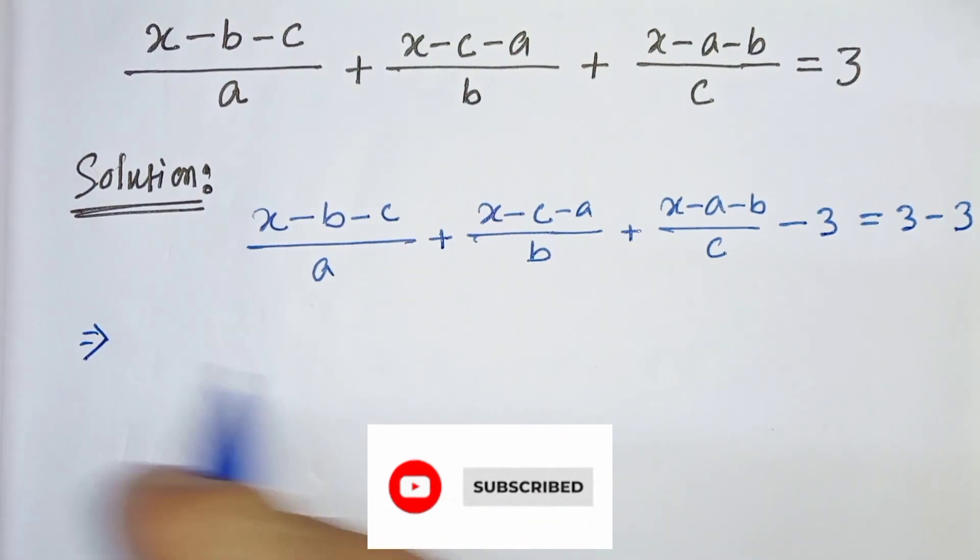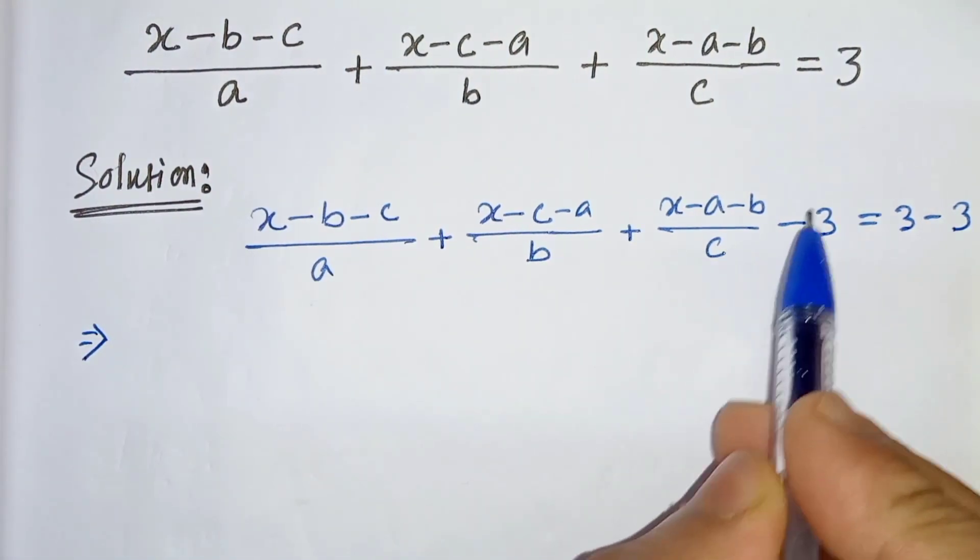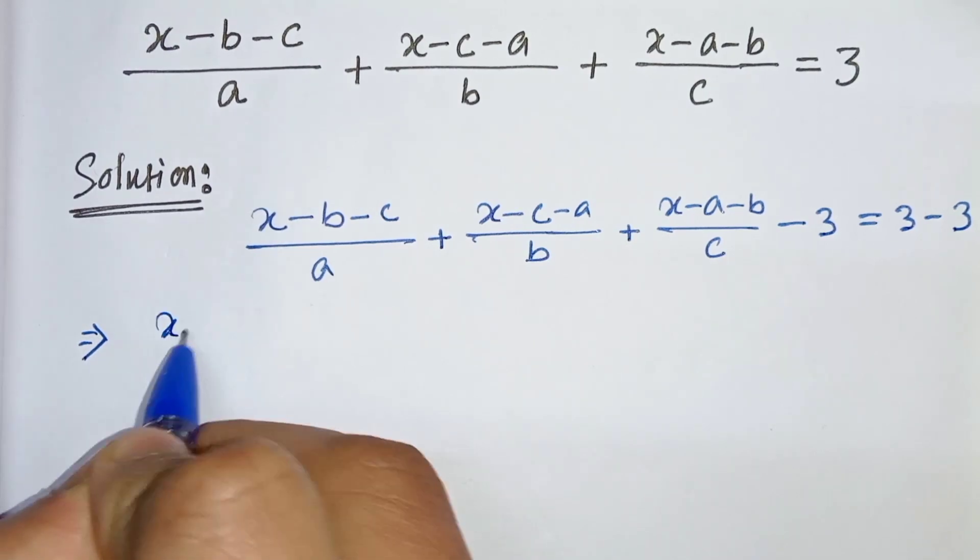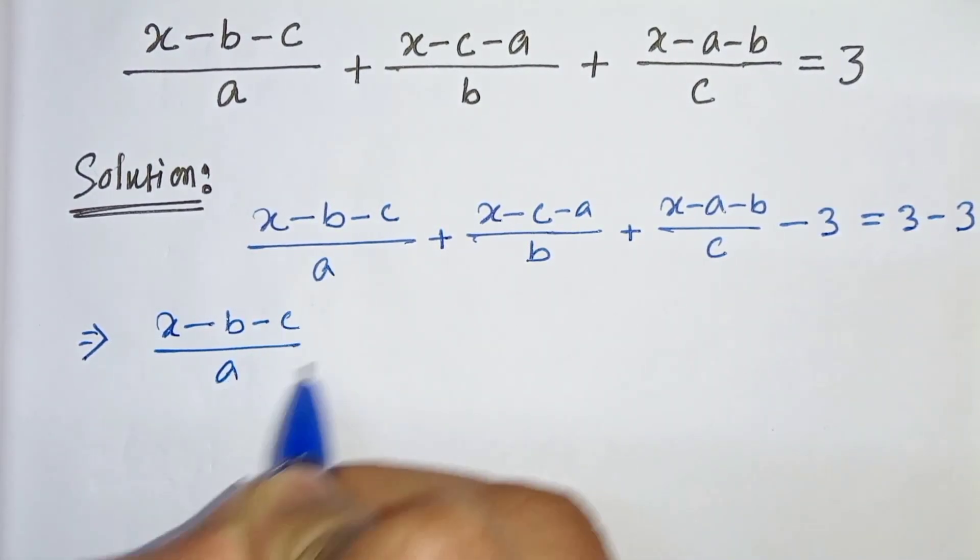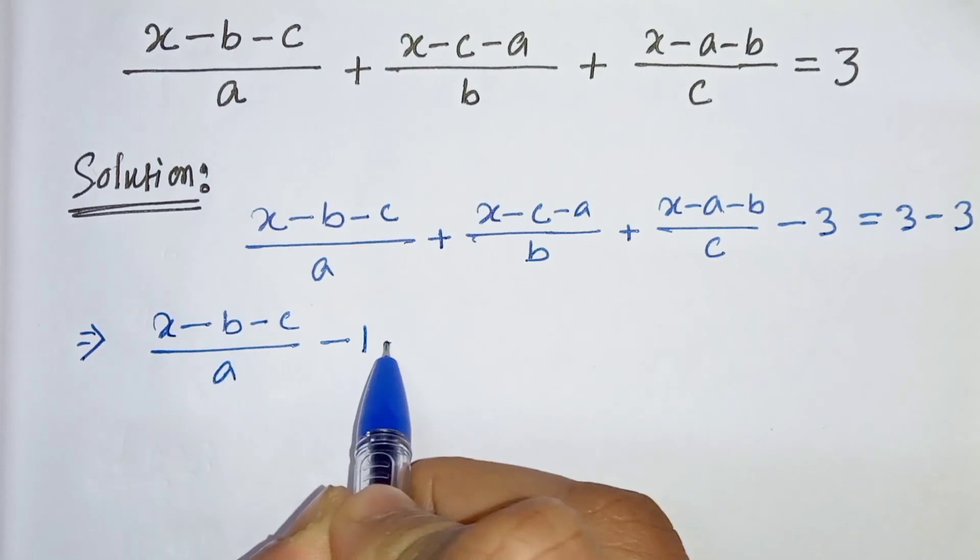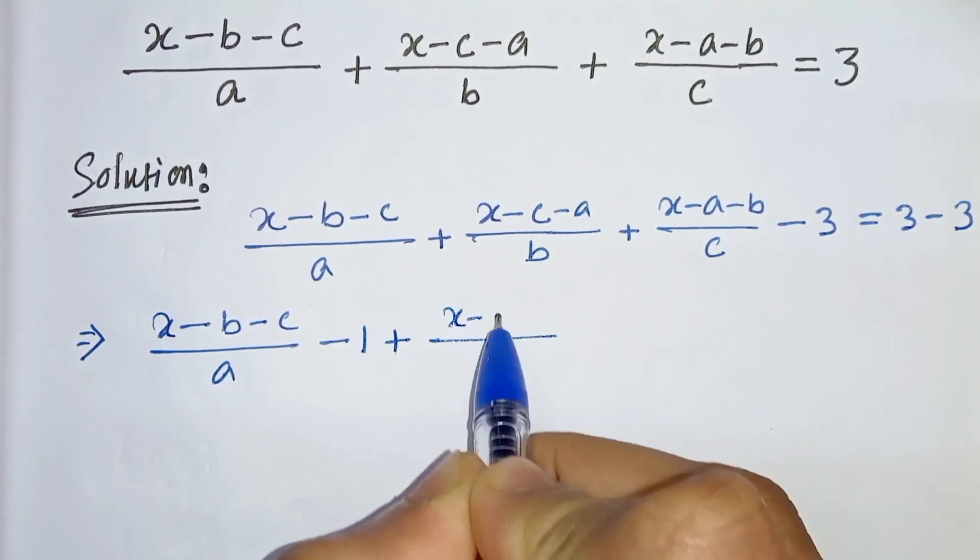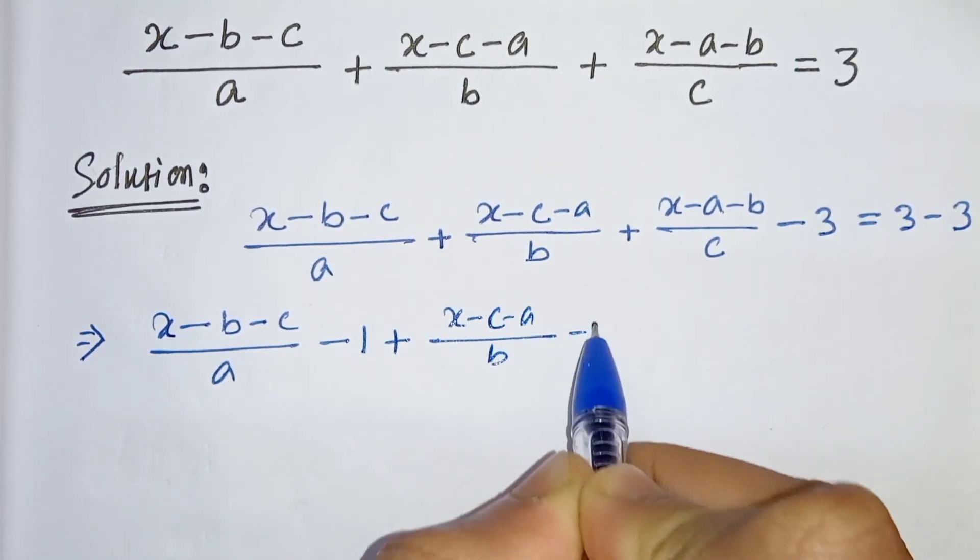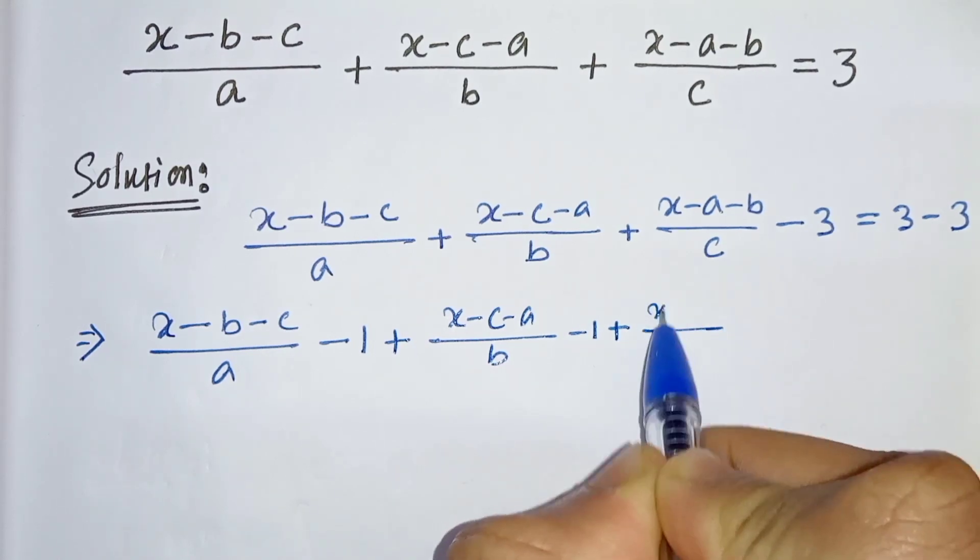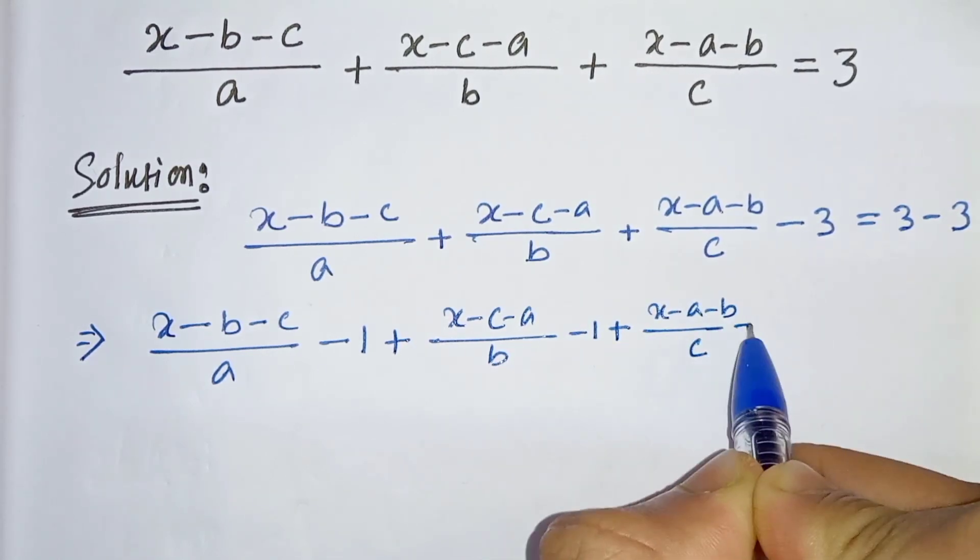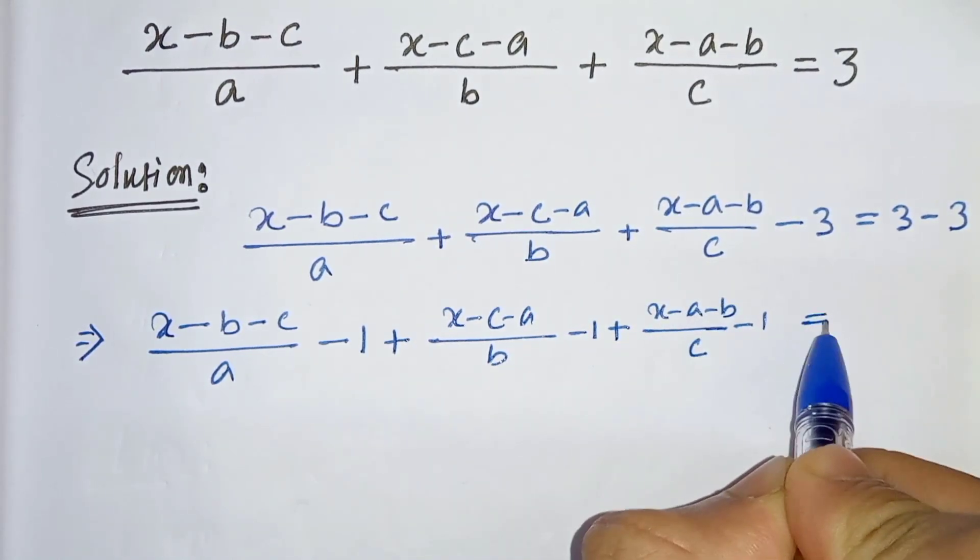In the next step we will write minus 3 as x minus b minus c by a minus 1 and again x minus c minus a by b minus 1 plus x minus a minus b by c minus 1. And here it will be 0.